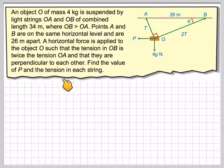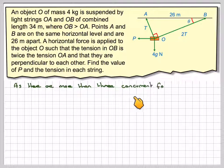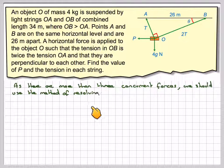Find the value of P and the tension in each string. As there are more than 3 concurrent forces, we should use the method of resolving forces. However, what we've got to do first of all is find the value of sin θ and cos θ. We don't actually have to find the value of the angle. So if we let this length here be x, then this one will be 34 minus x, because these two have to add up to 34.